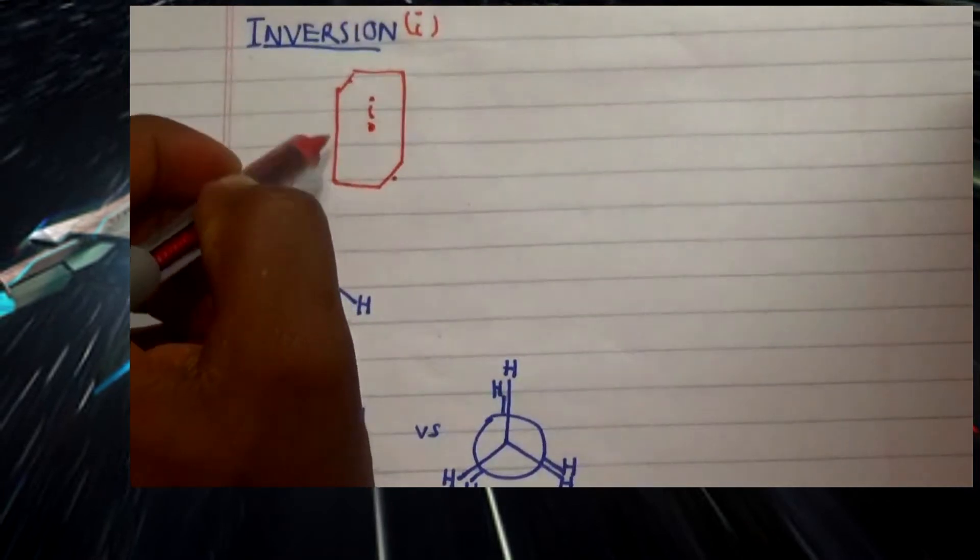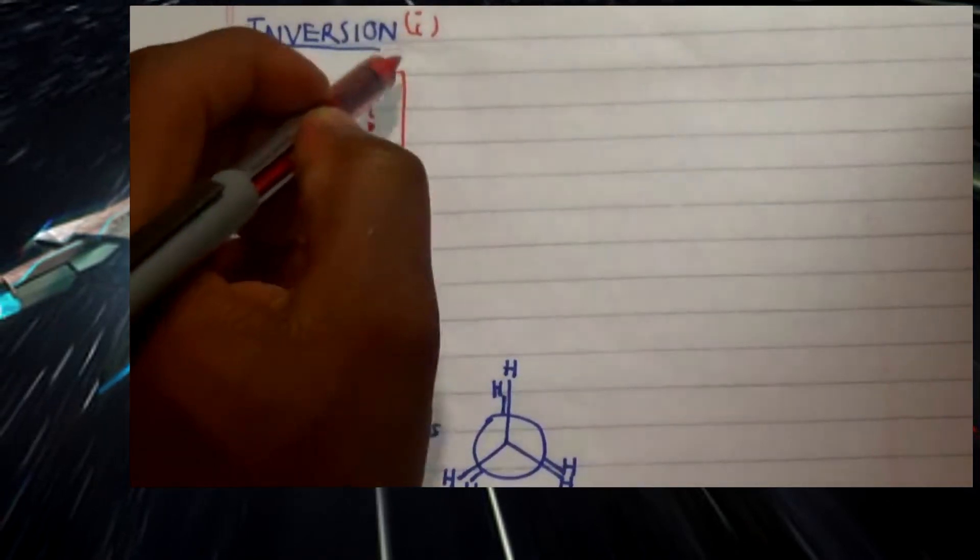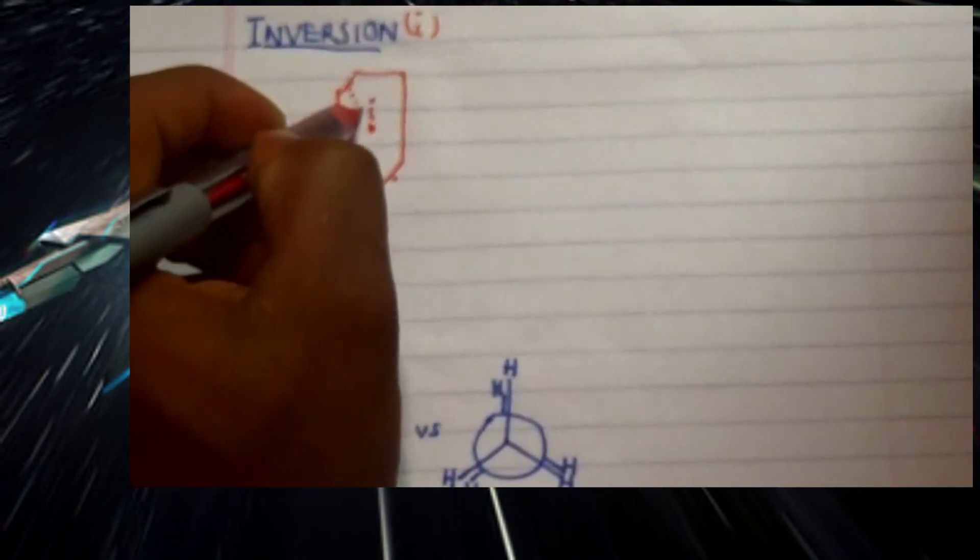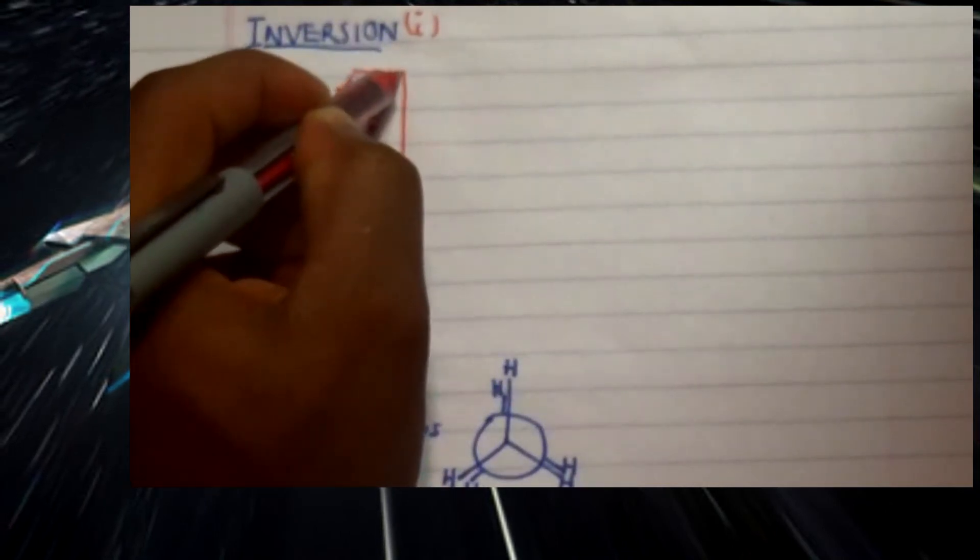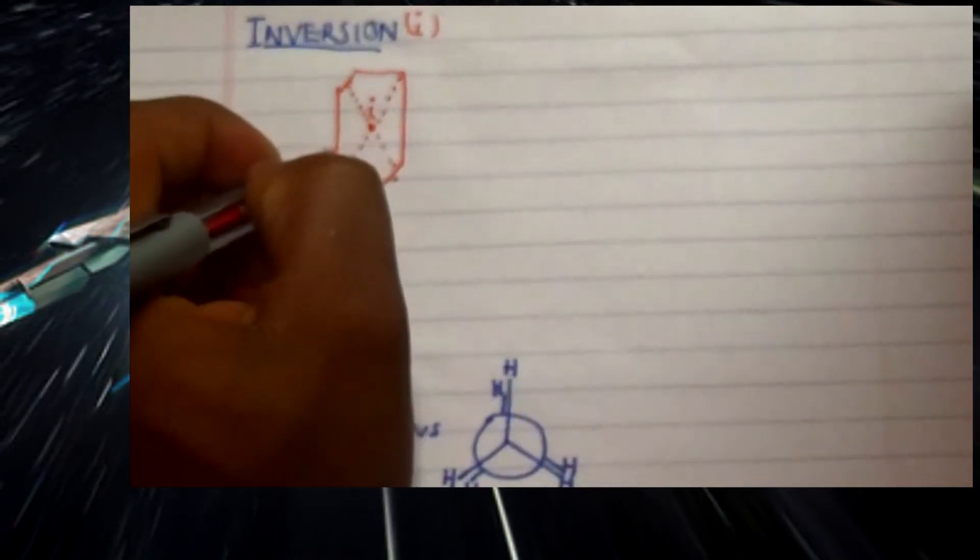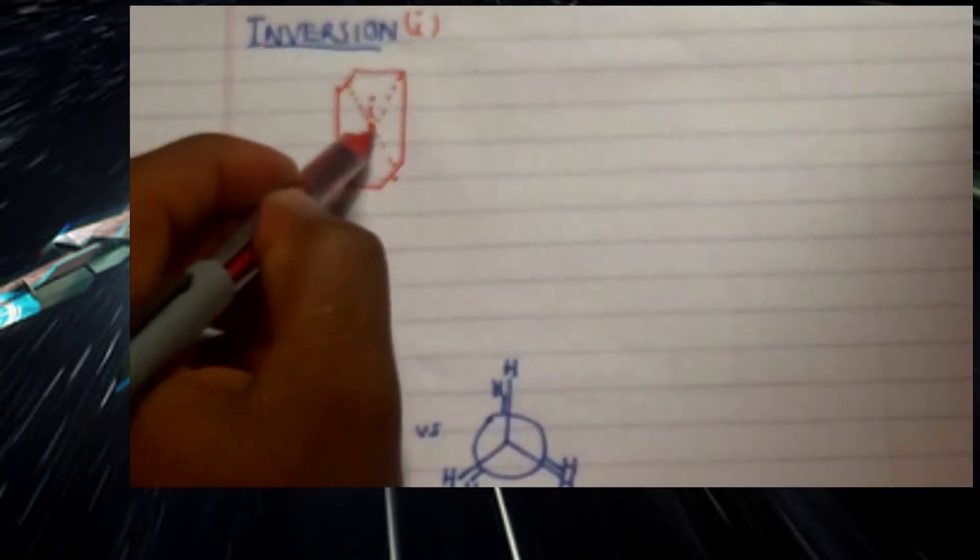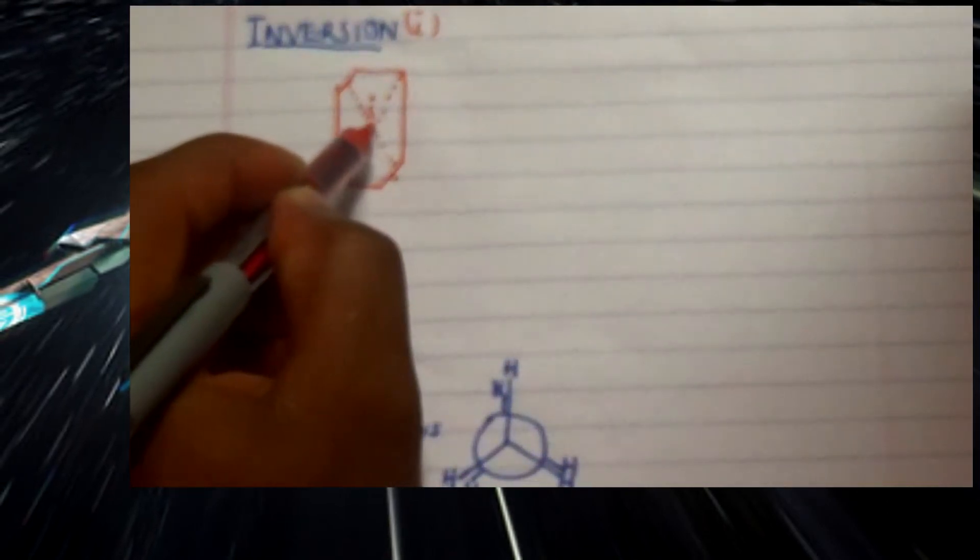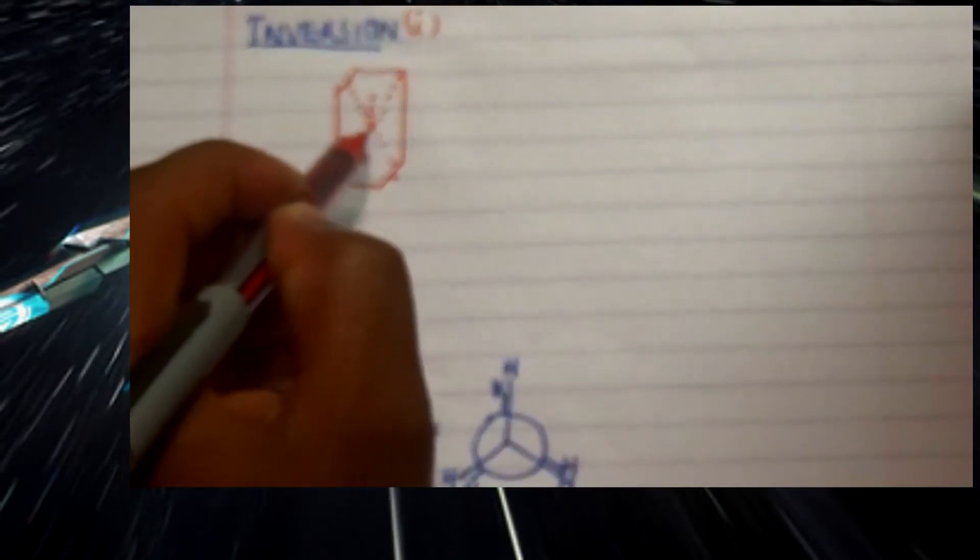Diagonal from this point to that point and this point to that point reveals the inversion center, which is at this particular point at the center of this compound.